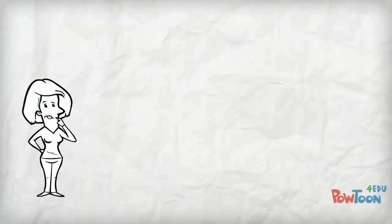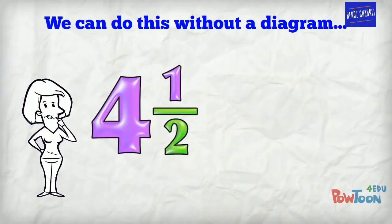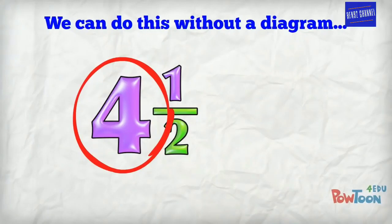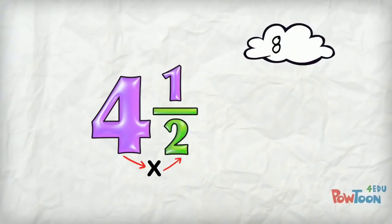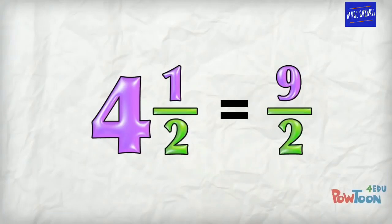We can also do this work without using a diagram. Let's take another example, four and a half. Each hole is worth two because our denominator is two. I have four holes, so that means I have four lots of two or four times two. That's eight. And I have another part here to add in from the numerator of one. So eight plus one is nine. That's our number of parts, so that's our numerator. I use the same denominator we started with, two. And I'm done.